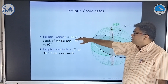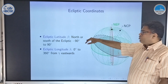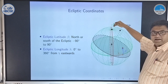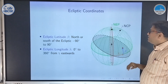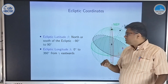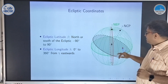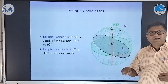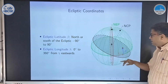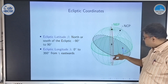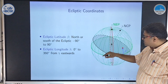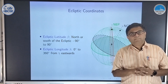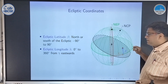Ecliptic latitudes are measured north or south of the ecliptic, going from minus 90 at south to plus 90. And ecliptic longitudes, just like our longitudes, go eastward from the vernal equinox point — that is the region where the ecliptic goes above the equator — making a full circle from 0 to 360. Ecliptic longitude is denoted by lambda and ecliptic latitude is denoted by beta.